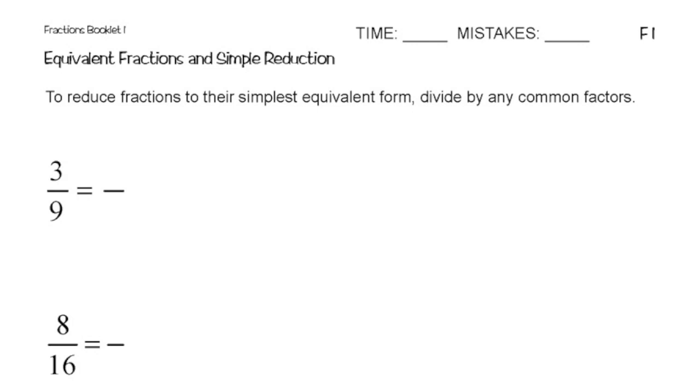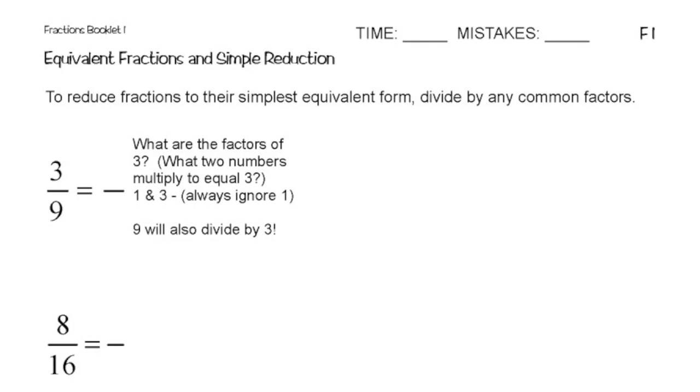So the first one we have here is 3 ninths. So the first thing I need to think of is, what are the factors of 3? Basically, factors are basically what two numbers multiply to equal 3. In this case, 1 and 3. Now, when we're dealing with factors between two numbers, you basically just always want to ignore 1. Because anything divided by 1 is itself, so that doesn't simplify anything if it just gives you the same result. In this case, 3 does. 3 will also go into 9, so 3 is the factor I need to use here.